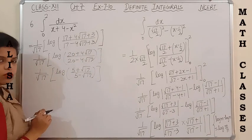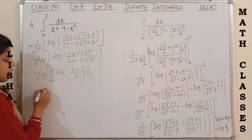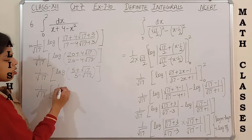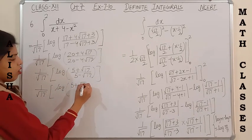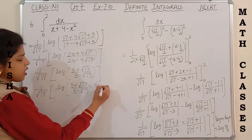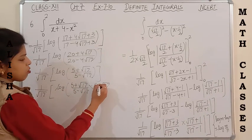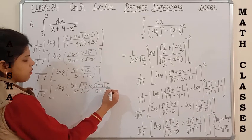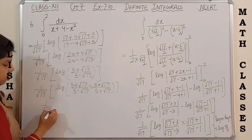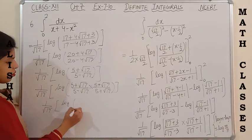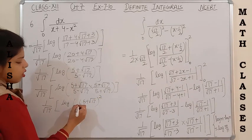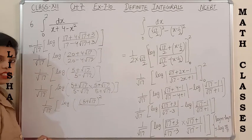This is an irrational number, so we have to rationalize it. Rationalizing by multiplying by (5 + √17)/(5 + √17), it becomes log of (5 + √17)² in the numerator. In the denominator, this is in the form (a - b)(a + b) = a² - b².